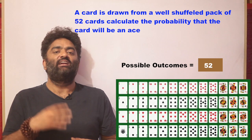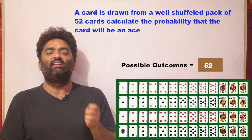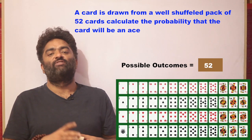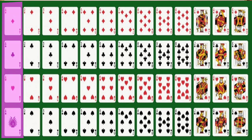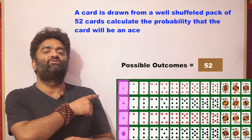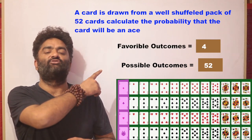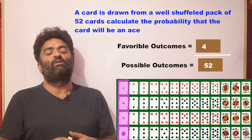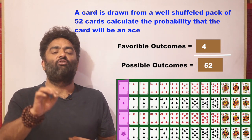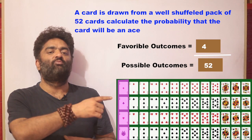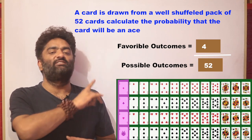You want an ace — that is your favorable outcome. In a deck of 52 cards, 4 are aces. So 4 favorable outcomes go in the numerator and 52 in the denominator. The probability of drawing an ace is 4 upon 52, or 1 by 13.